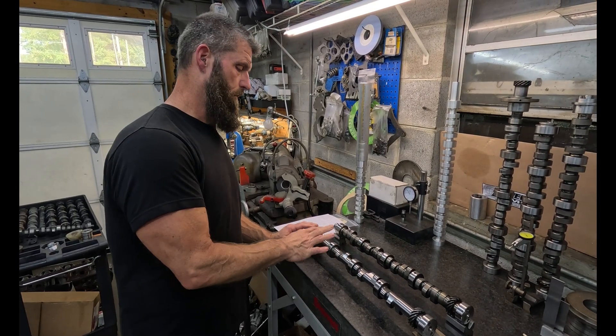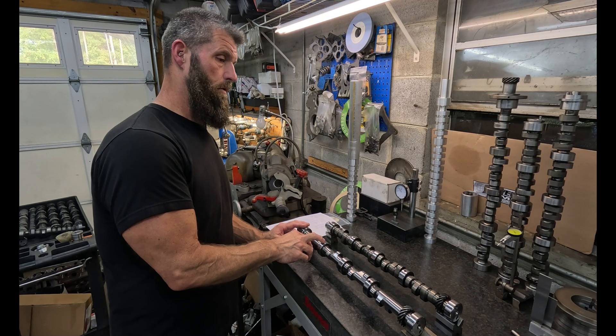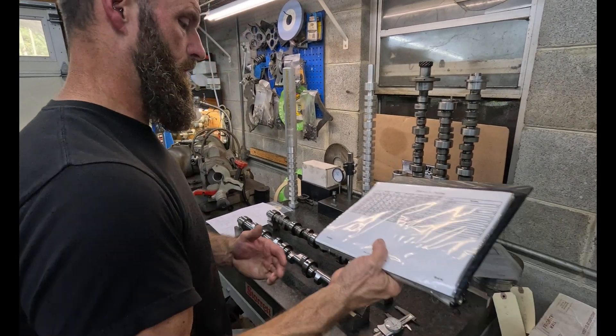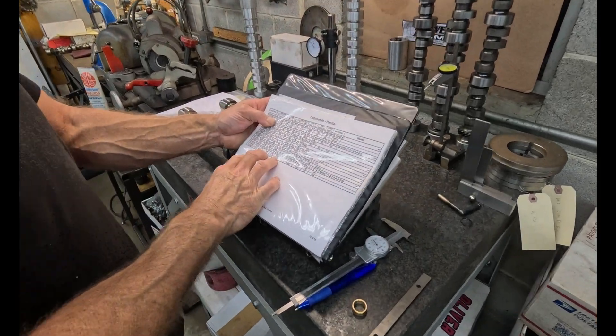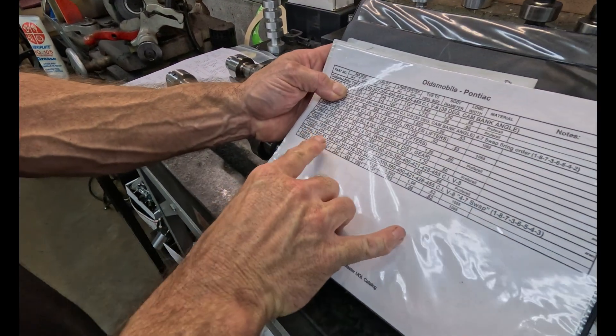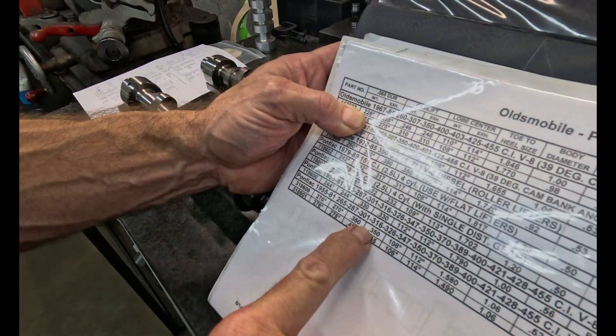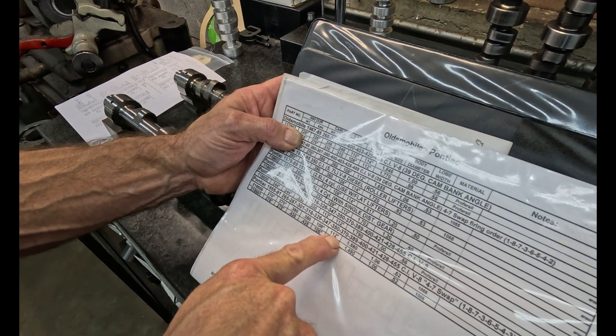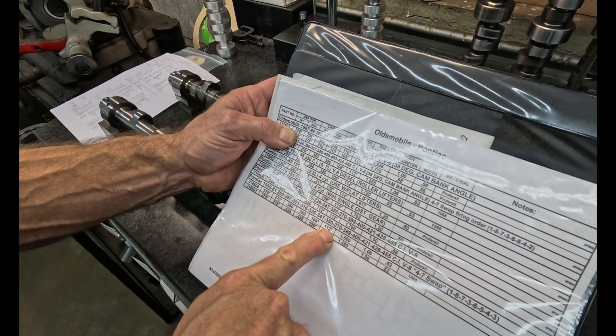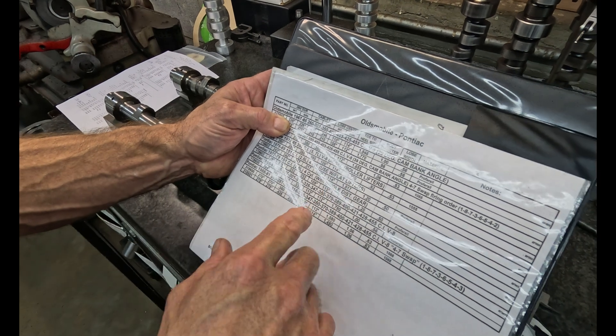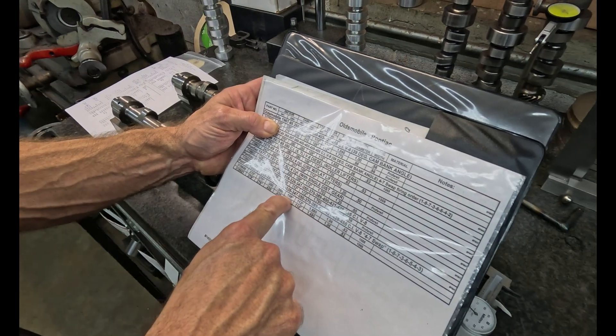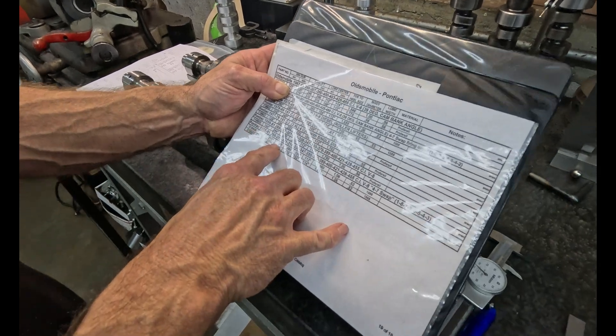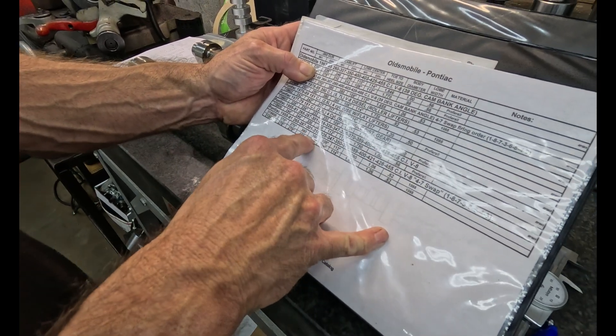So this core is part number 313-600, and if we look right here in the core catalog, we can see that the core is 270 at 50 with 350 lobe lift, 108 intake center line, and 112 exhaust center line. So that's 110 plus 2 is what that ends up being. So keep in mind that 350 lobe lift.